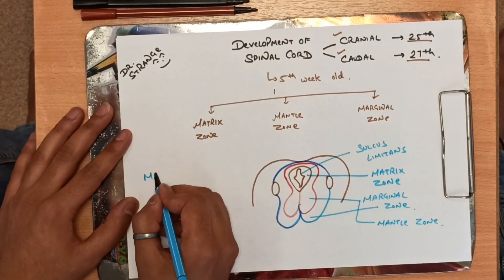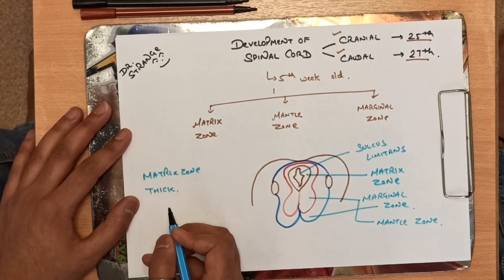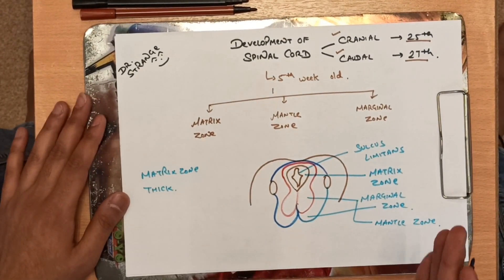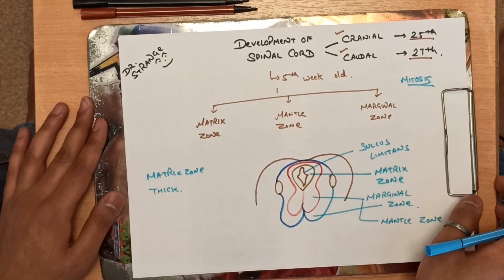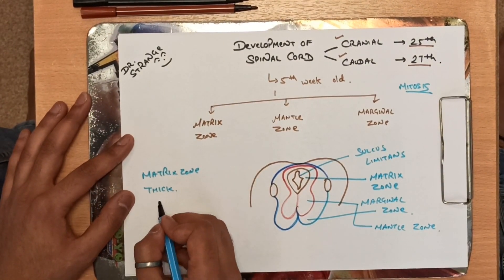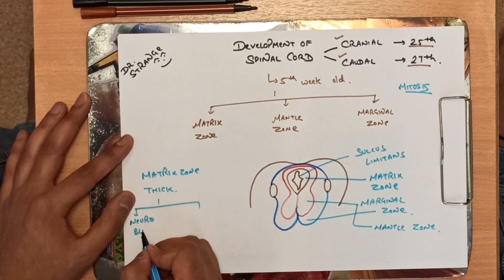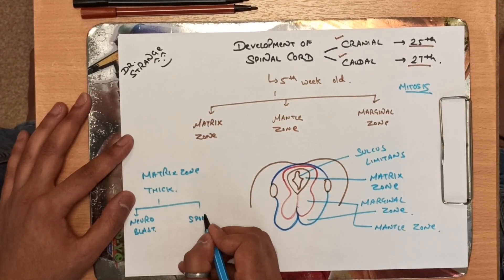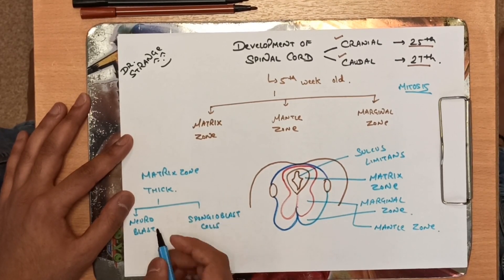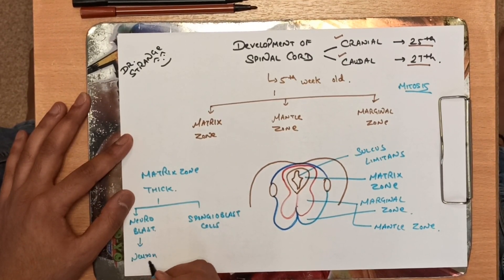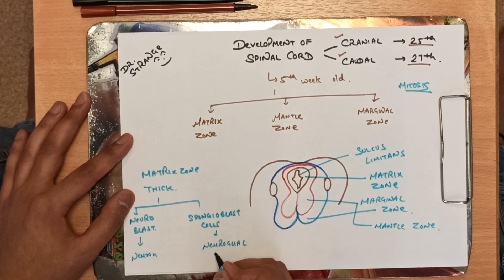Now, the matrix zone is thick. During development, proliferation of cells takes place mainly by the process of mitosis. When this region undergoes mitosis, it results in the formation of two types of cells: neuroblast cells and spongioblast cells. The neuroblast cells will later on develop into neurons.